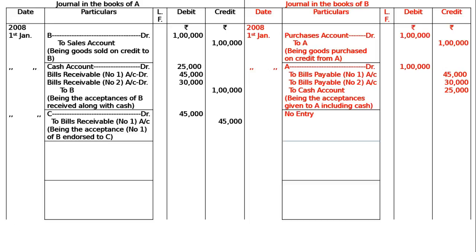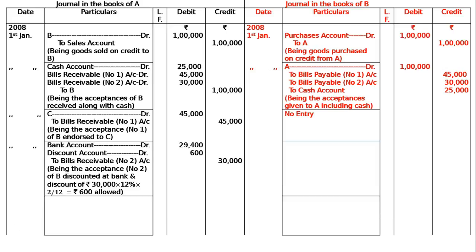The 2nd bill was discounted from the bank at the rate of 12% per annum. That is, bank account debited Rs. 29,400, discount account debited Rs. 600, to bills receivable number 2 account Rs. 30,000 — being acceptance number 2 of B discounted at bank, and discount of Rs. 30,000 into 12% into 2 months equals Rs. 600 allowed. For this entry, there will be no entry in the books of B.